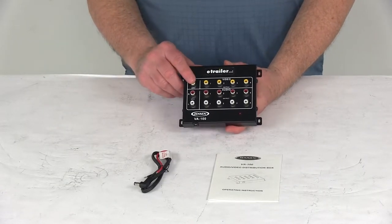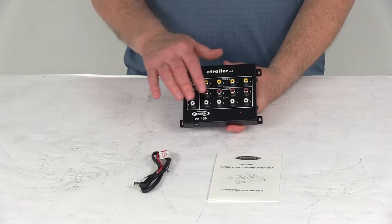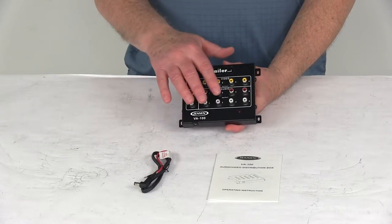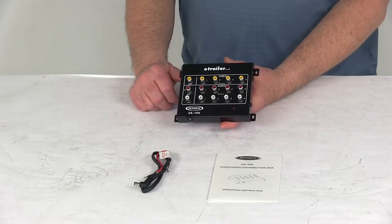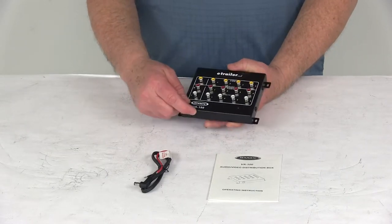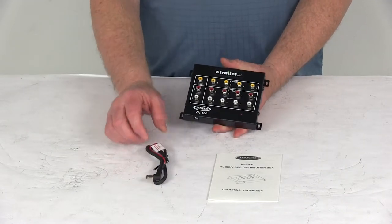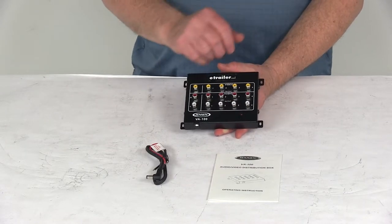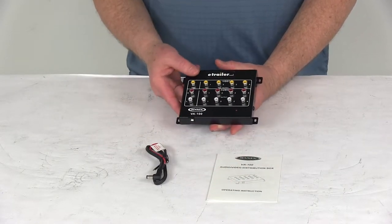It includes the video input jack, video output jacks, left and right audio input jacks, and left and right audio output jacks. It also has a DC input for the included DC power cord. It has a power LED that lights up when operating and comes with a set of operating instructions.